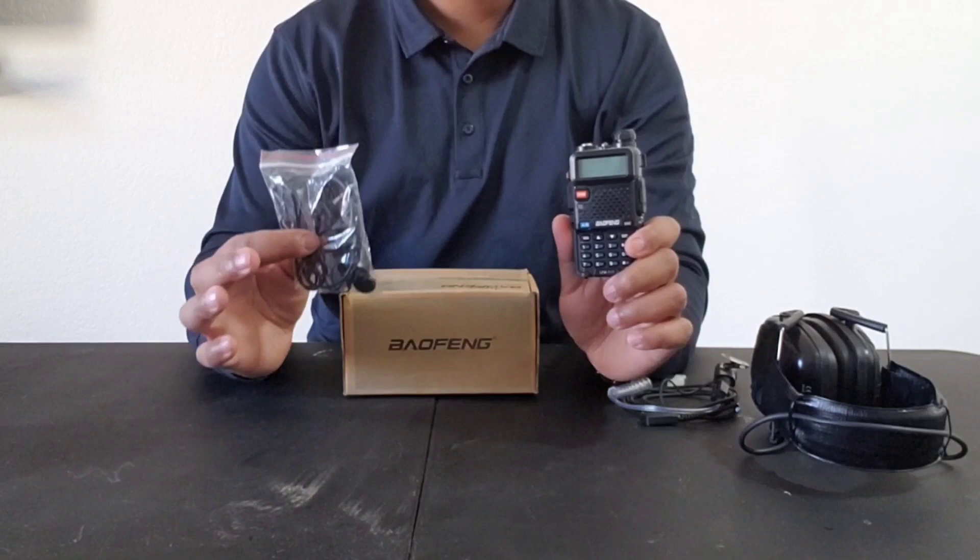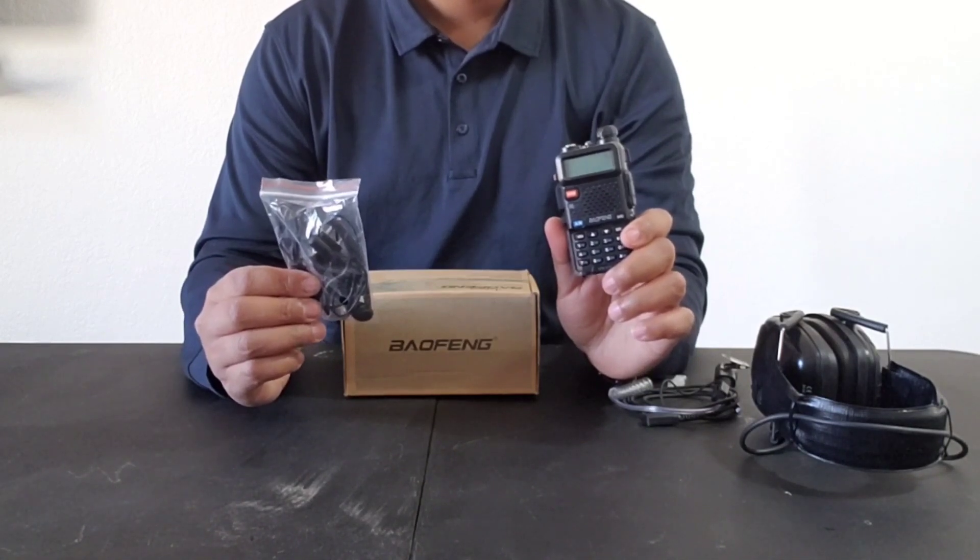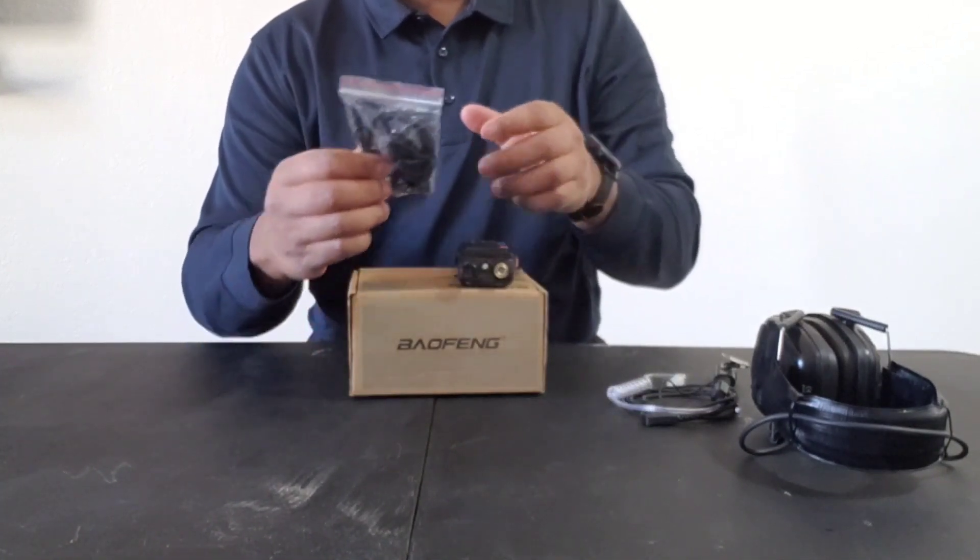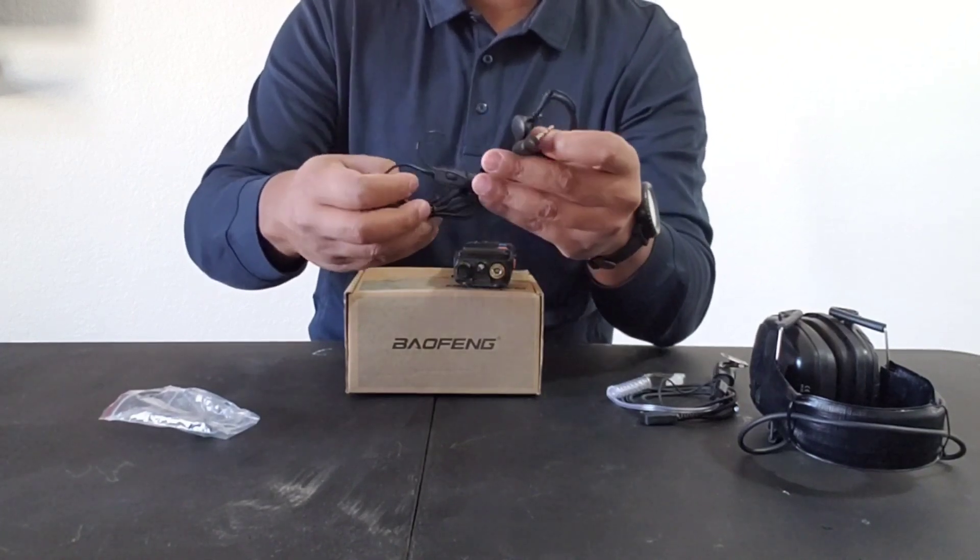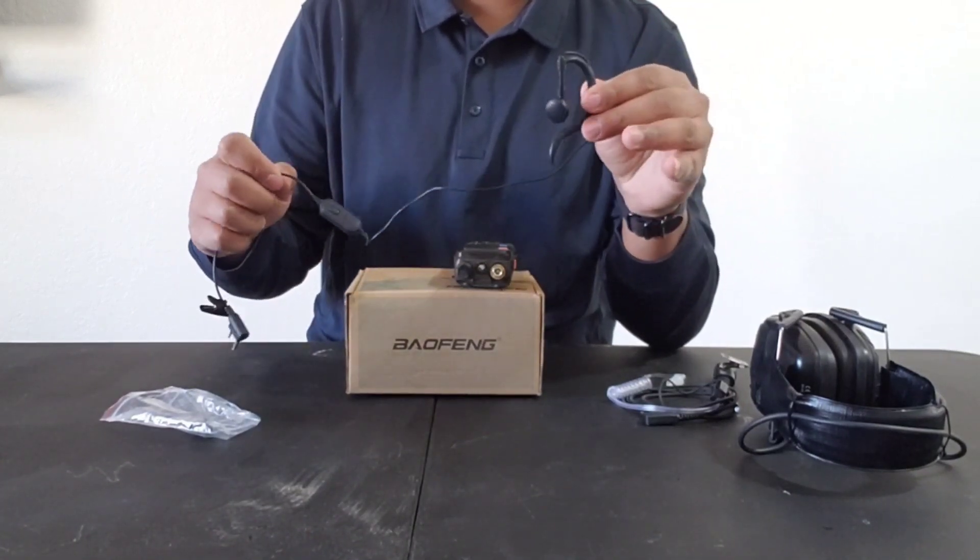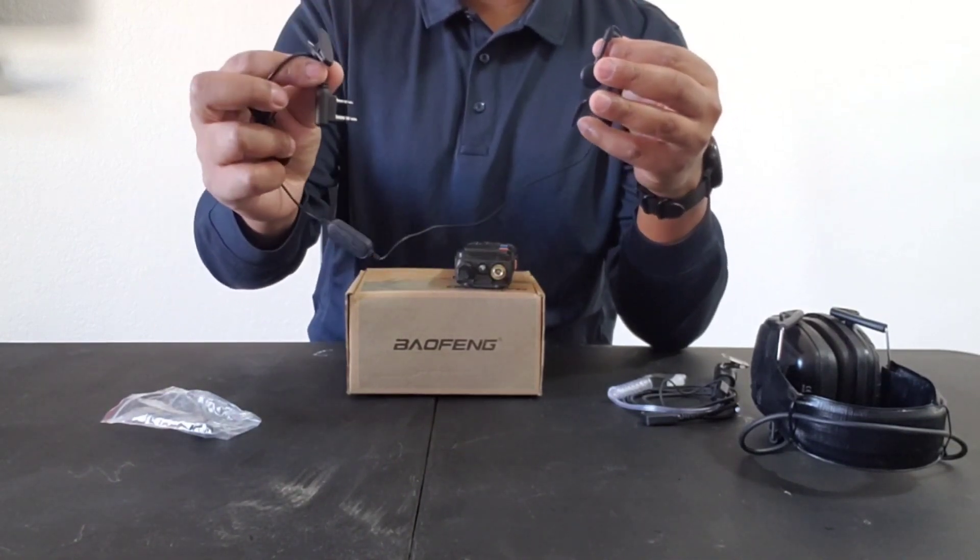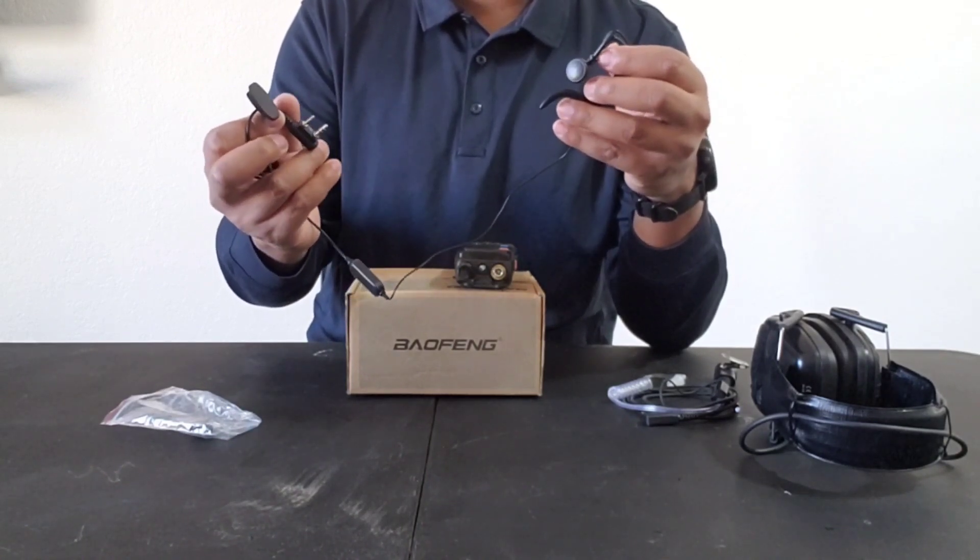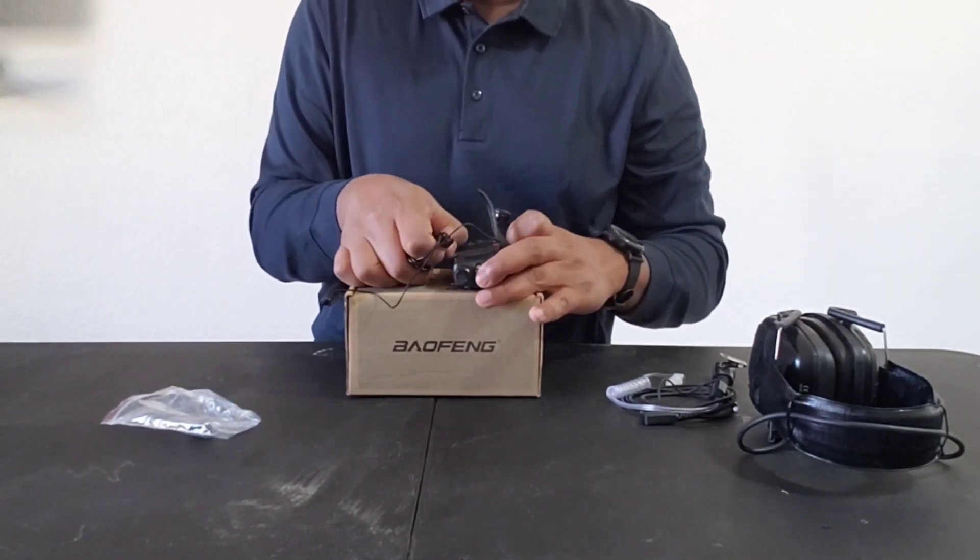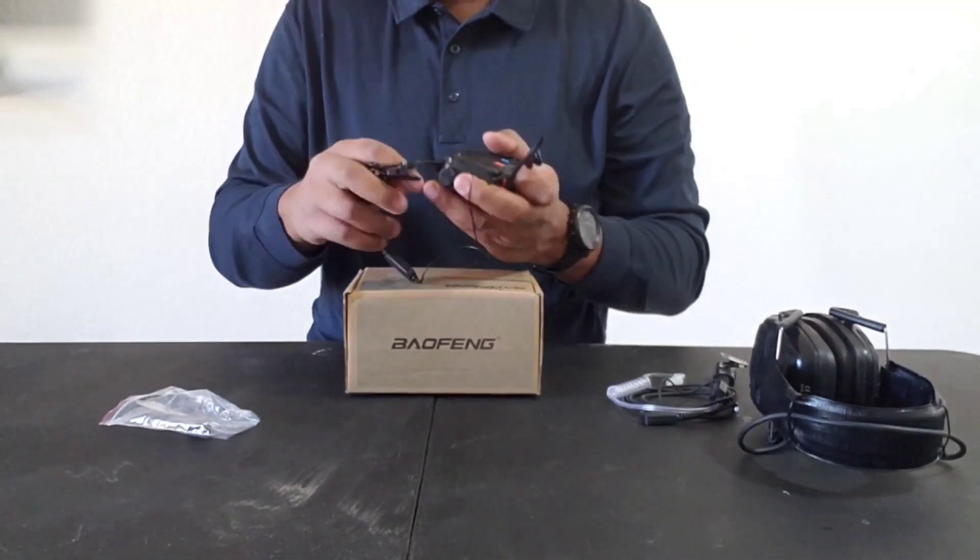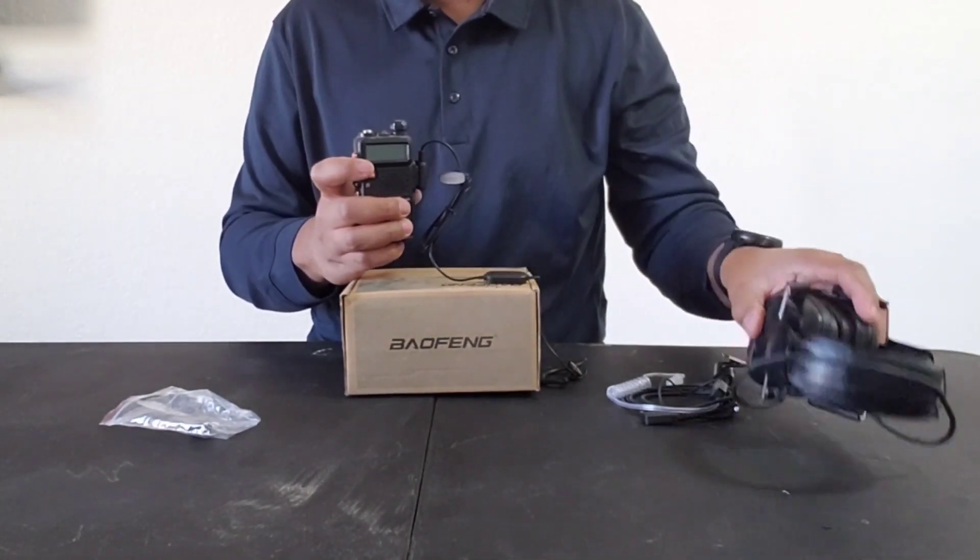So you get your radio and you get a cheap piece of junk push to talk and earpiece. Okay. So without changing anything, you can legit take this earpiece and push to talk, attach it to your kit where it makes sense. Plug in the Kenwood style plugin, that's a little hook in so that you can hear and talk through the mic.